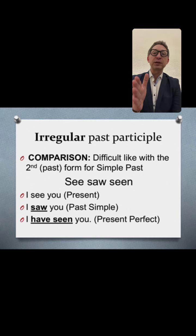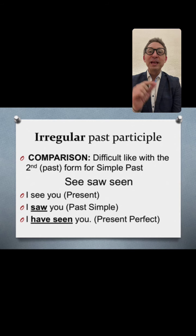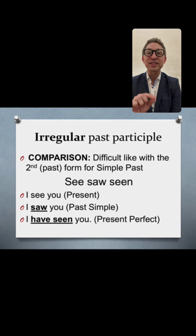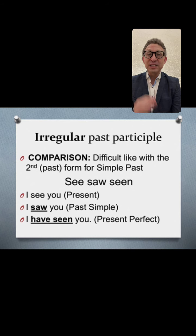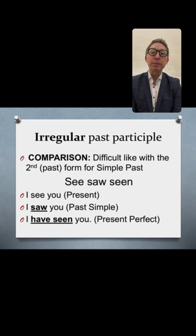With 'see': saw and seen. Present tense is fine — I see you. Past simple is irregular — I saw you. And then another irregular with present perfect — I have seen you. So with both past simple and present perfect, one difficulty lies in how to form the past participle 'seen' or the past tense 'saw.' That's a common difficulty shared by both tenses.